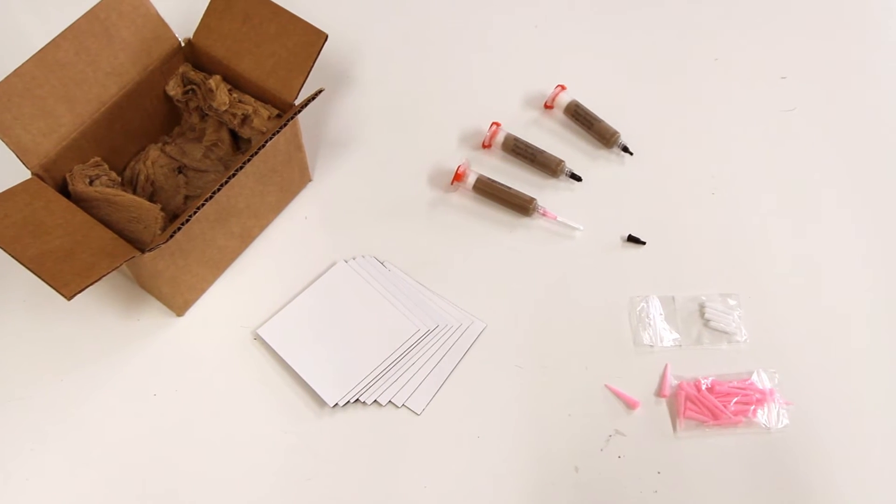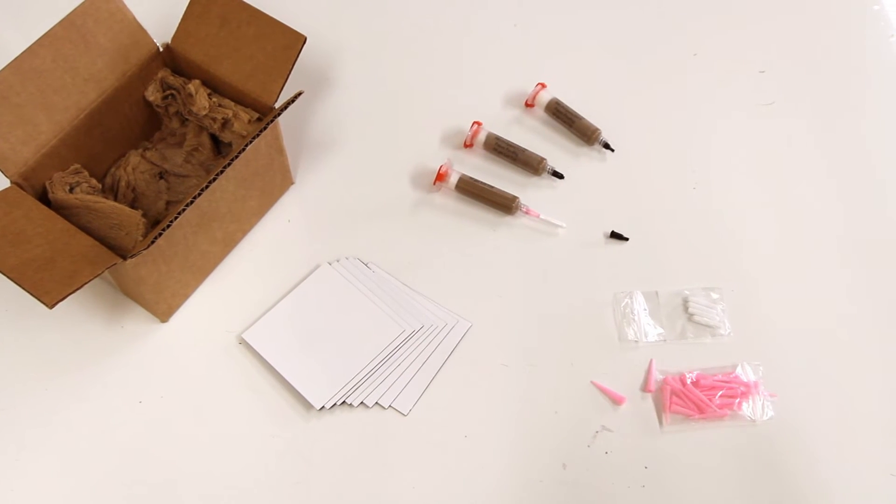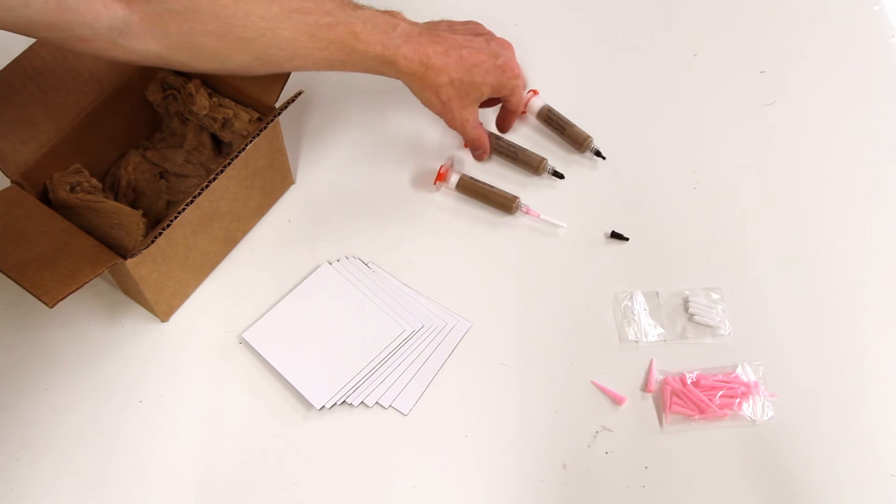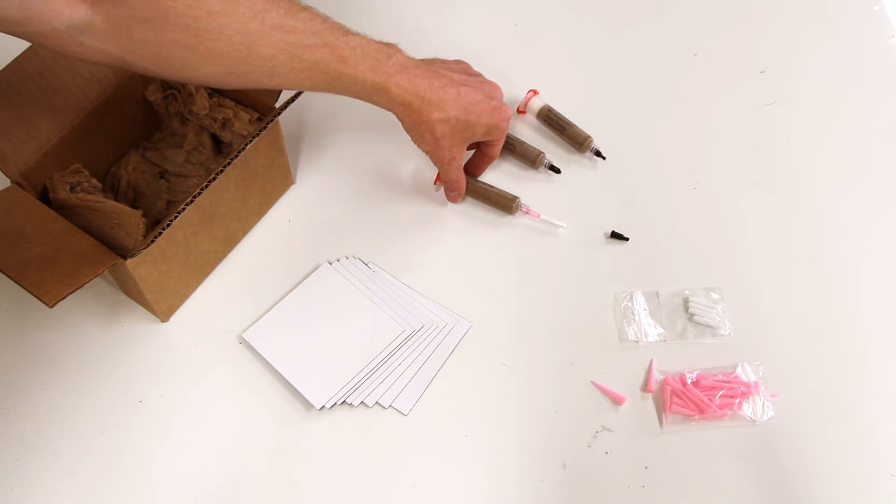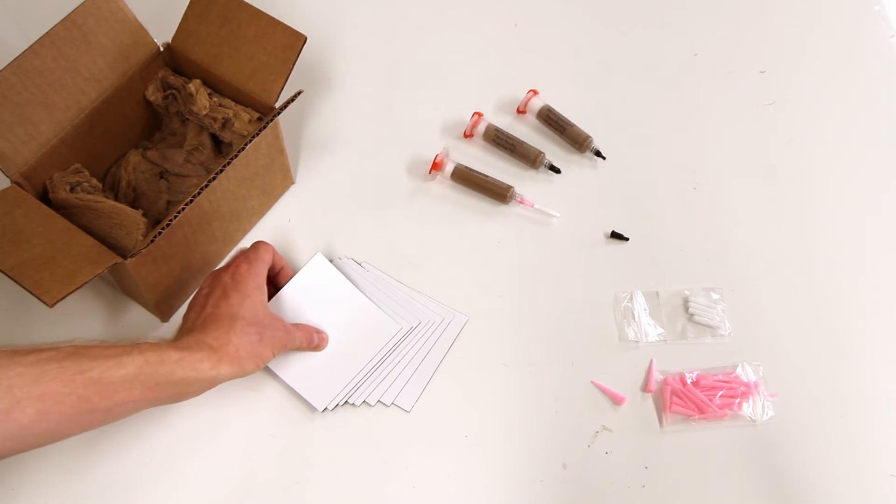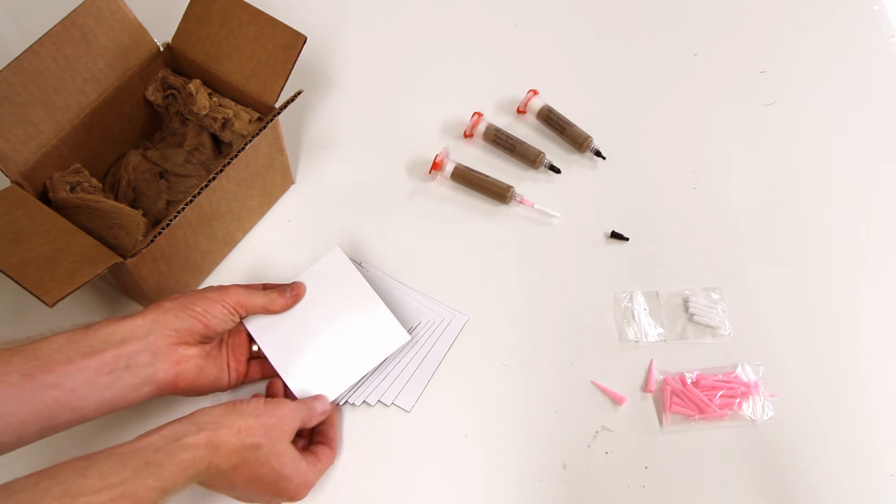So when you order the starter pack for the Mini Metal Maker, you'll get three of the tubes of bronze clay. This is Bronze Paste 3D by Metal Adventures. It looks beautiful when you fire it and finish it—looks very, very golden in color.